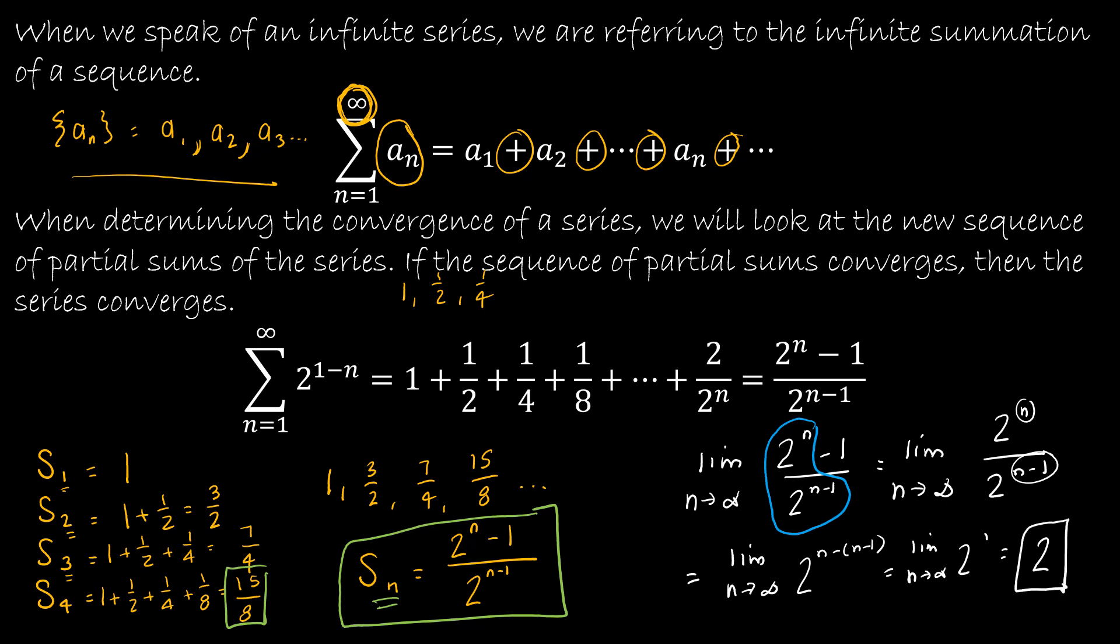So what does that tell me? That tells me if I continue this list and find s sub 5, s sub 6, etc., as I continue, it's going to get closer and closer to the value of 2, which is going to be the value of convergence. So this is going to converge, and it's going to converge to a sum of 2.